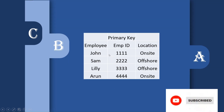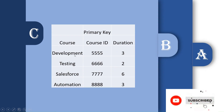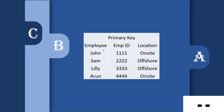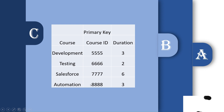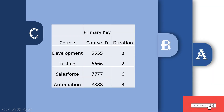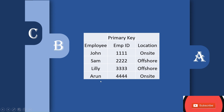In a many-to-many relationship, any employee can enroll in any course. For example, John can enroll in a development course, testing course, salesforce course, or automation course — that's one-to-many for John alone. But multiple employees can take the same course: John, Sam, Lily, and Arun can all take the development course, and multiple employees can also take the testing course. So both sides represent a 'many' relationship — this is called a many-to-many relationship between two tables.